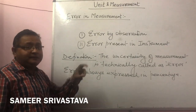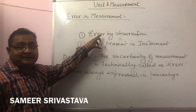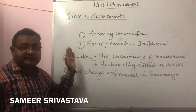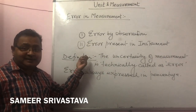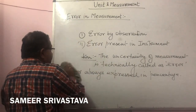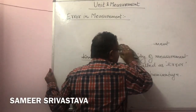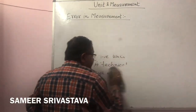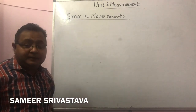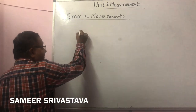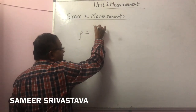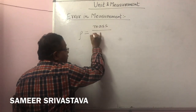The causes to generate error are: error by observation and error present in instrumentation. Now I am taking an example to show how error is generated. If I am going to take an example for the measurement of density of a metal block — density is a physical quantity.